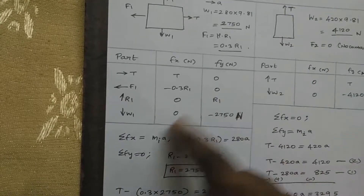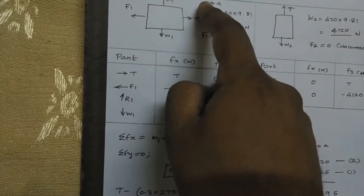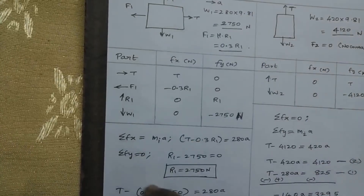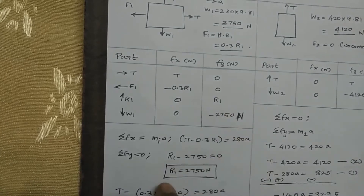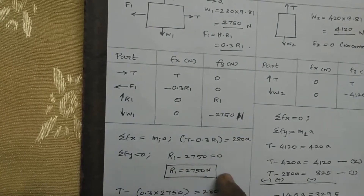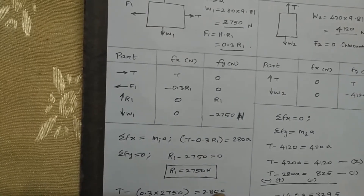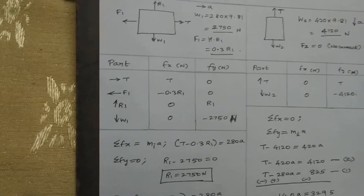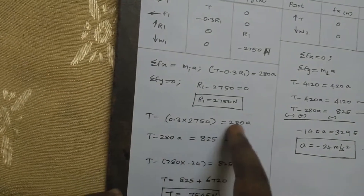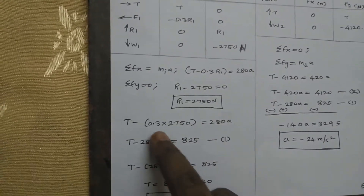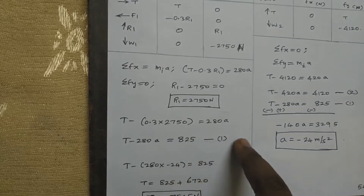The summation of F in the y-direction equals zero, because the movement is on the x-axis. So F of Y equals zero: R1 minus 2750 equals zero, so R1 equals 2750. Therefore: T minus 0.3 times 2050 equals 280A. This gives us equation number one: T minus 280A equals 825.